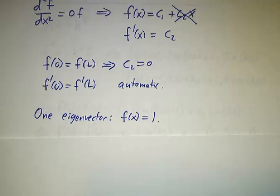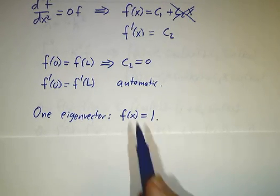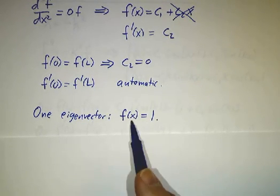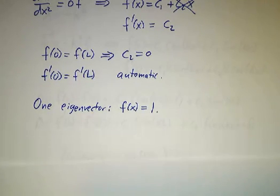It is an eigenvector with eigenvalue 0. There's 1 and 1, f(x) is a constant, which is to say our basis eigenvector is just the function 1.